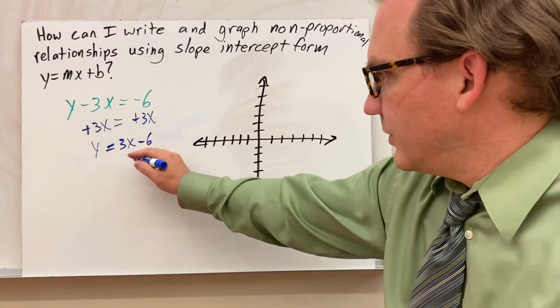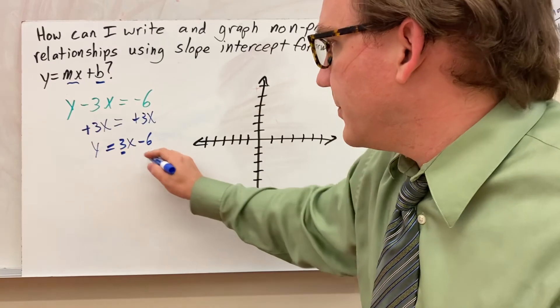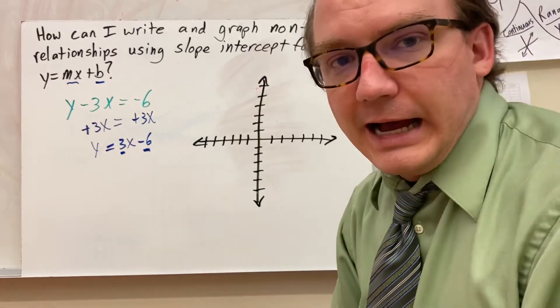Now, though, we have written this in what looks more like mx plus b. So we have a slope and we have a y-intercept. I can now graph it.